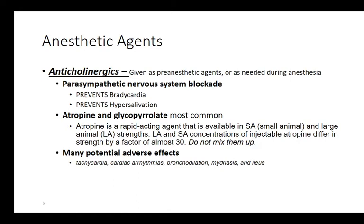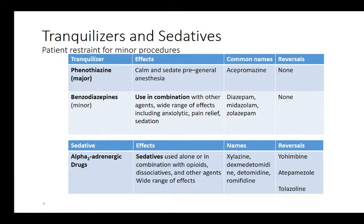Atropine and glycopyrrolate come in two different concentrations — small animal and large animal — and you do not want to mix those up if you work in a mixed animal practice. They do have potential side effects: giving too much of something that prevents bradycardia can cause tachycardia, cardiac arrhythmias, bronchodilation, mydriasis (pupil dilation), and ileus (intestines stop working). These are all consequences of completely blocking the parasympathetic system. We give anticholinergics as pre-medications to mitigate the side effects of tranquilizers and sedatives.